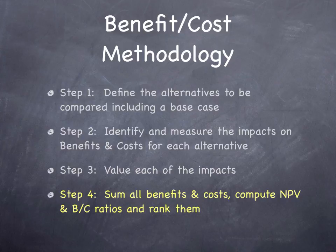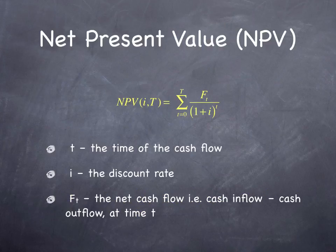Note that if you rank things by net present value and you rank things by benefit-cost ratio, you might come up with different answers. The idea of net present value is to take the future stream of benefits and value it in present-day dollars, and the future stream of costs and value that in present-day dollars. The net present value is the difference between the present value of all future benefits and the present value of all future costs.